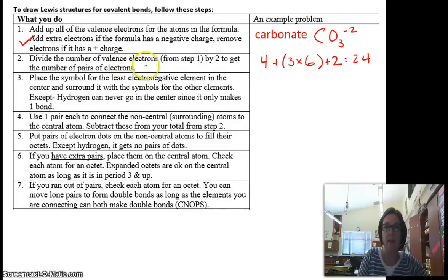For step 2, divide that number of electrons by 2 to get the pairs. So if I divide that by 2, I find that I have 12 pairs of electrons.